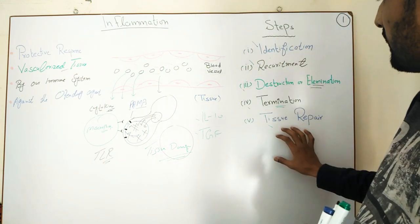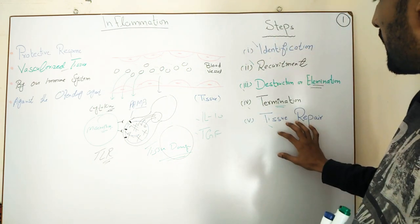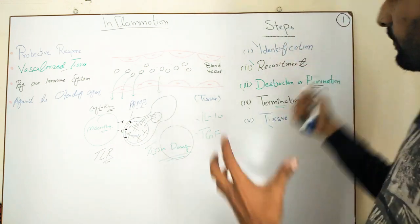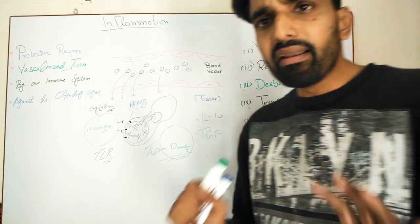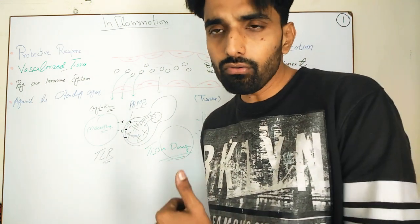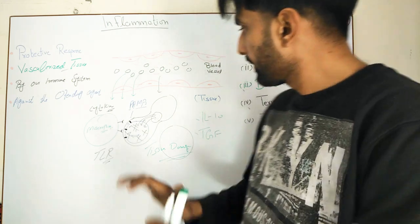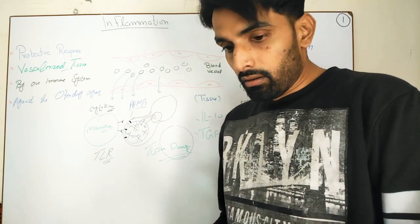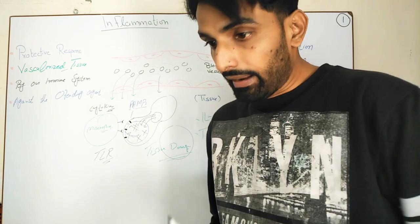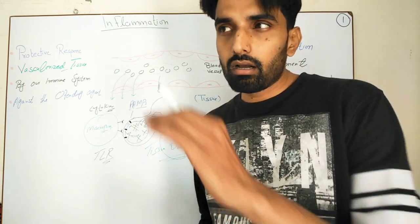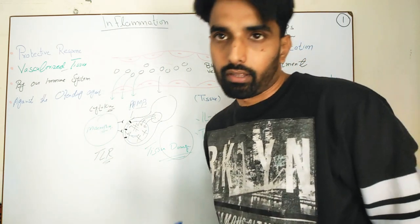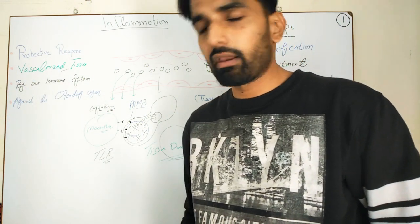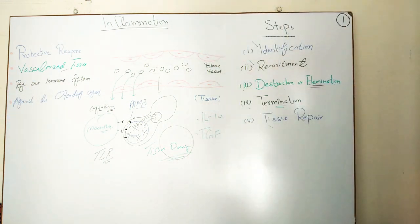The details of all these steps — tissue repair, recruitment, and destruction — will be discussed in later videos, so stay connected. I hope today's lecture is clear. In the next video we will start with the types of inflammation — acute and chronic — and then move on to cellular events and vascular events. Stay with me. Thank you so much.